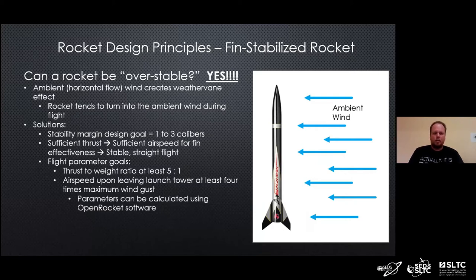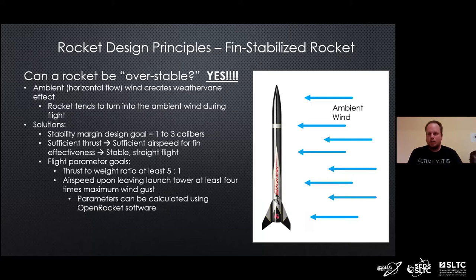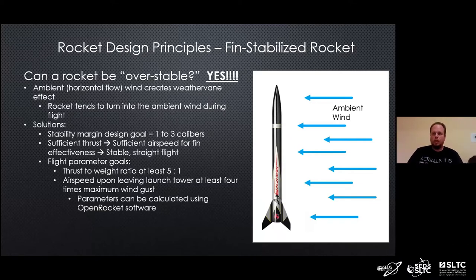OpenRocket can calculate that for you. You can select the length of the launch rod and it will account for the mass of the rocket and thrust of the motor, calculate the speed at which the rocket leaves the launch rod, and you can predetermine that you're going to have a safe flight based on that.